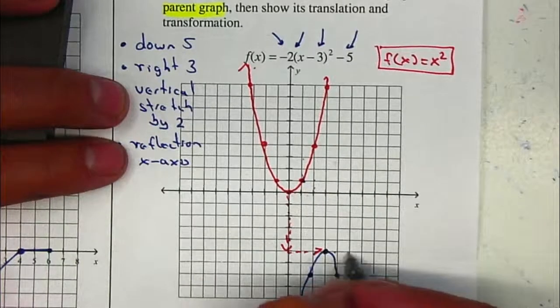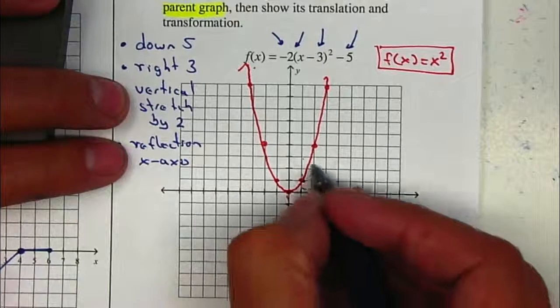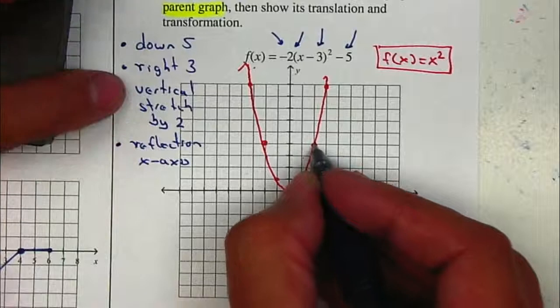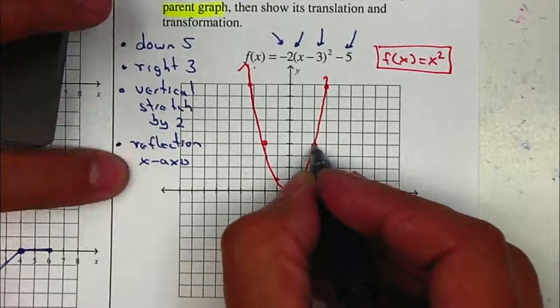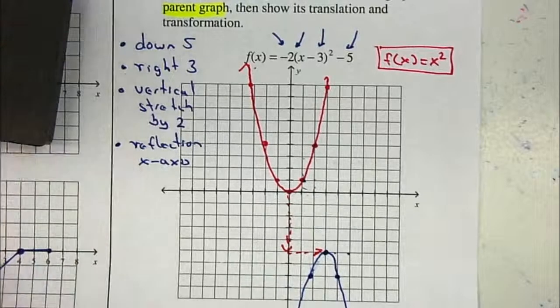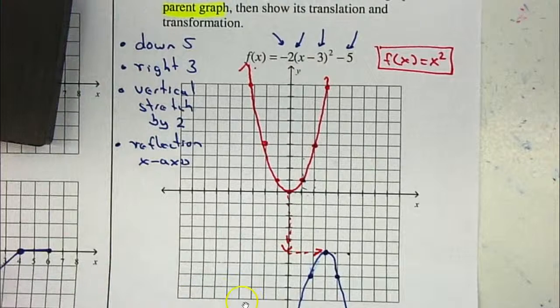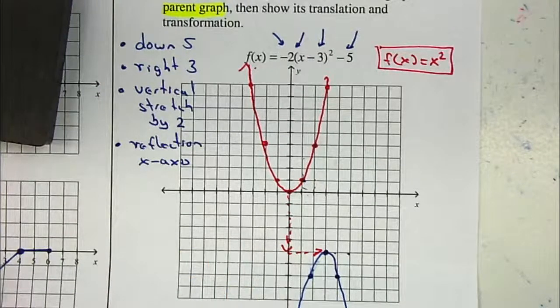Do the same thing with the next one. It's away 2. It's 1, 2, 3, 4. Multiply by 2 gives me 8, but in this case, reflected will be down 8. And those are my points. Let's go. All right.